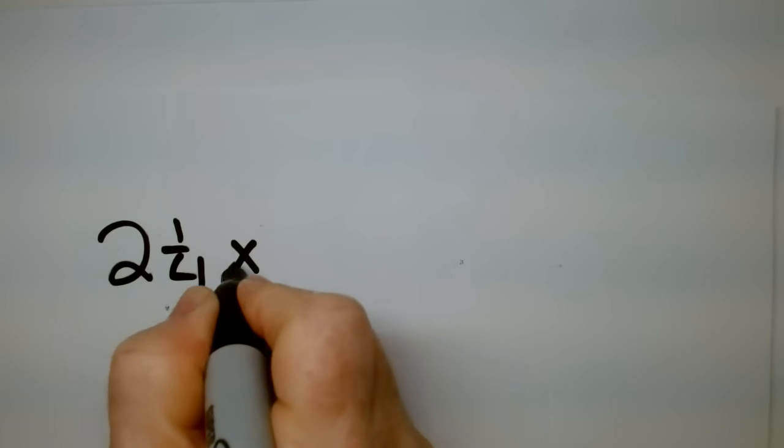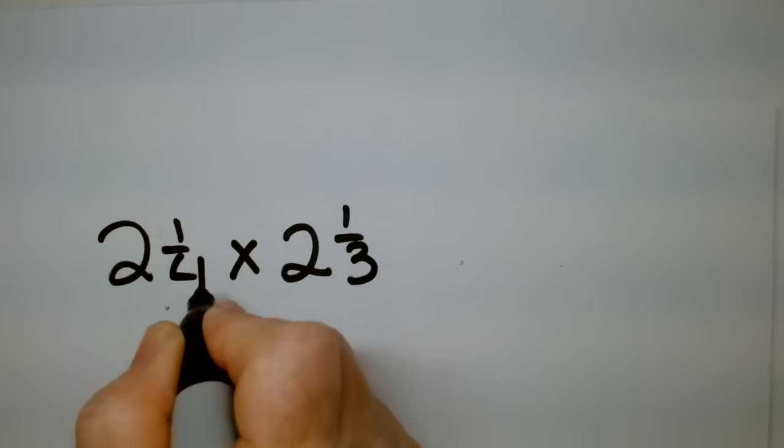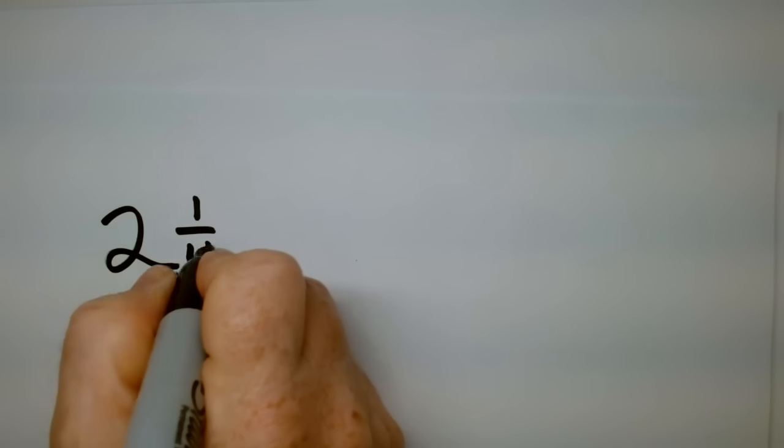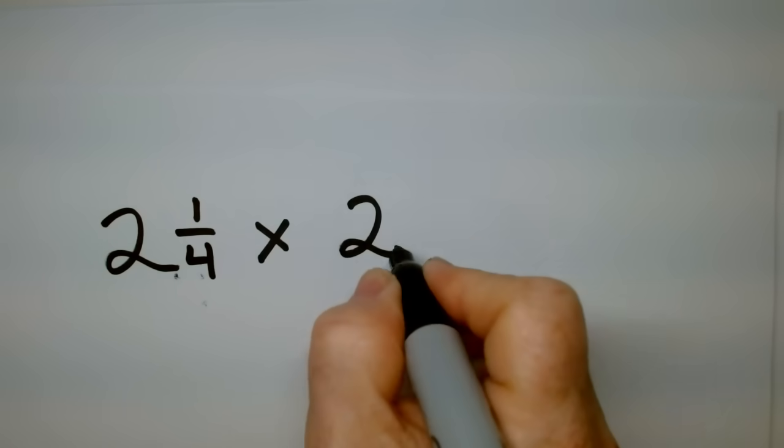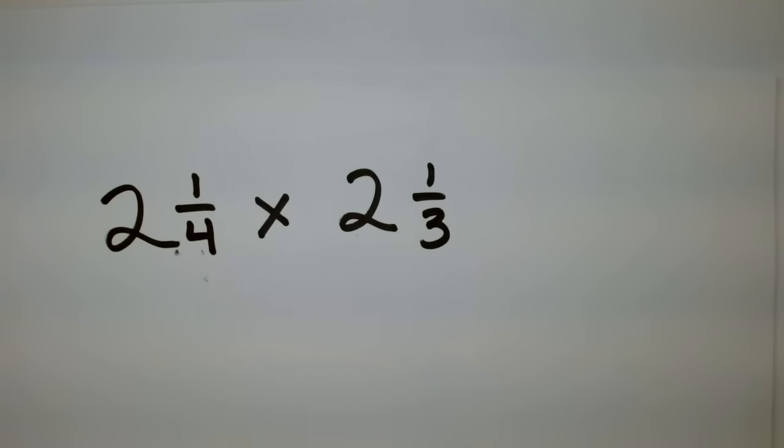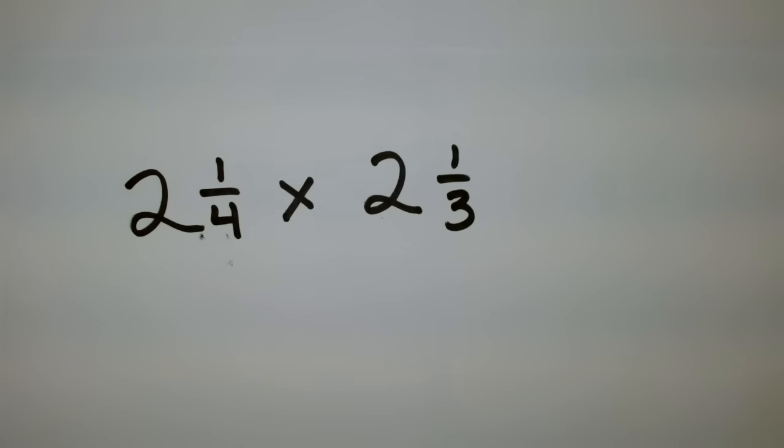How do we do something like this? 2 and 1 quarter times 2 and 1 third. First step. You say the word yuck. Can you do that? Great. Get it out of our system.